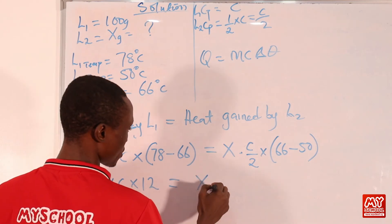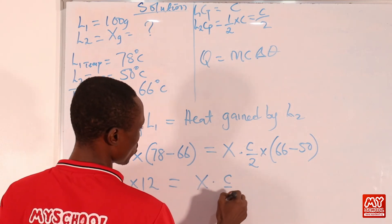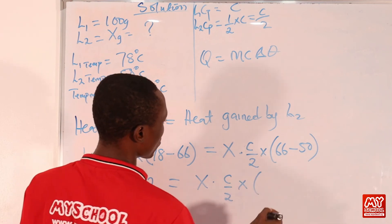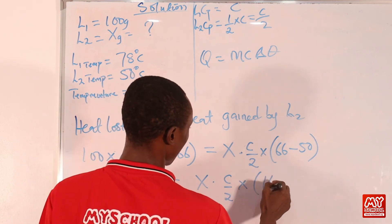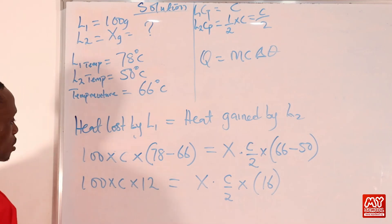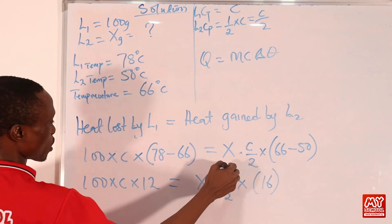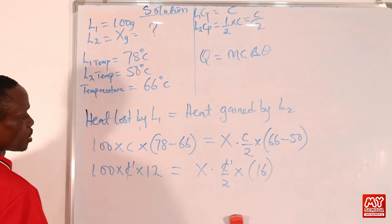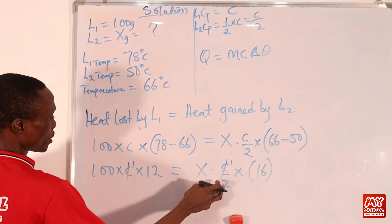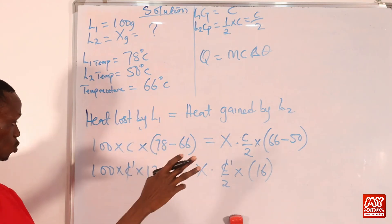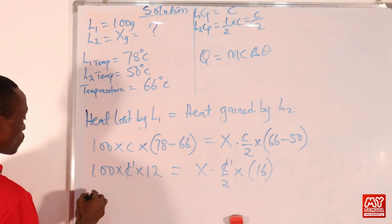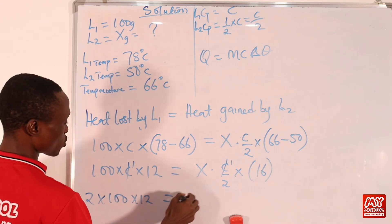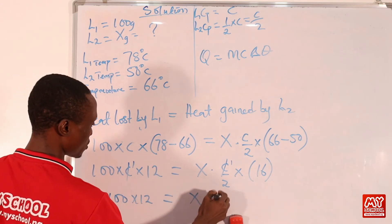The c cancels from both sides. To clear the fraction, multiply both sides by 2, giving: 2 × 100 × 12 = s × 16.